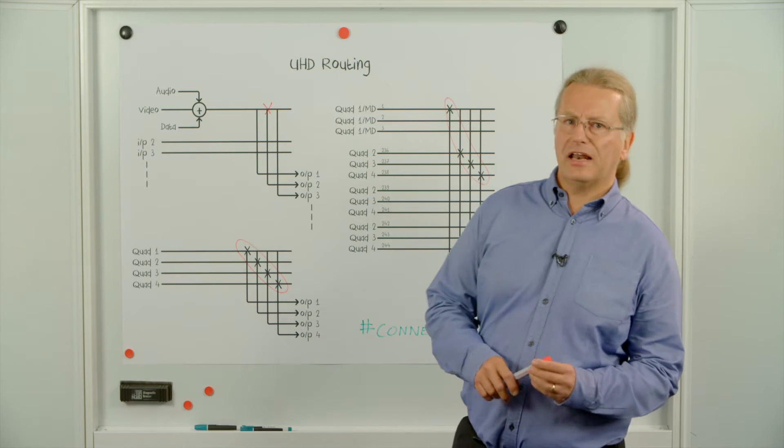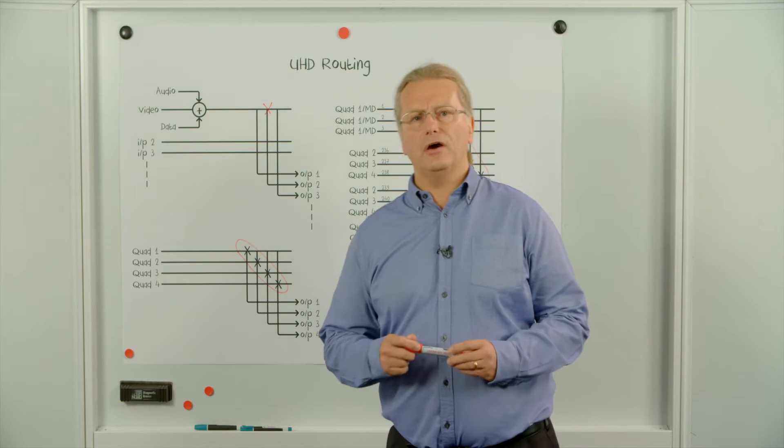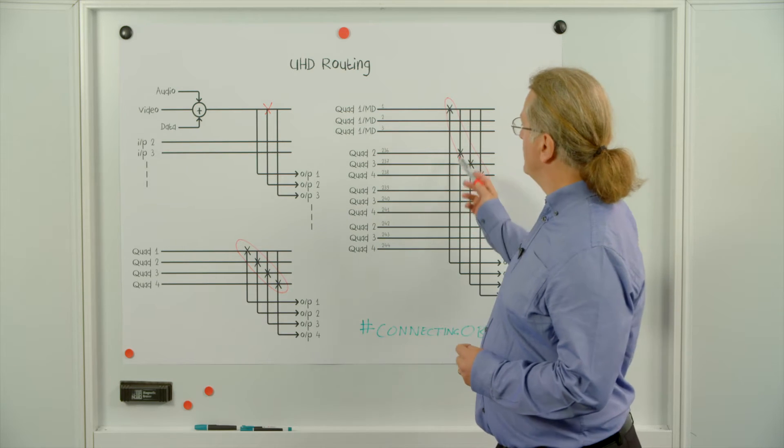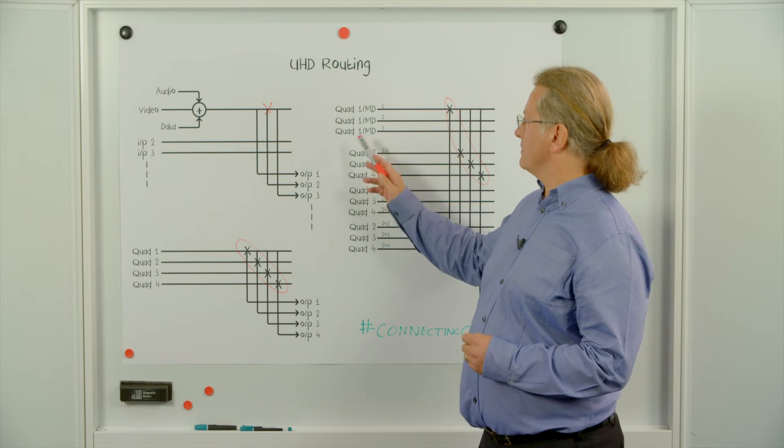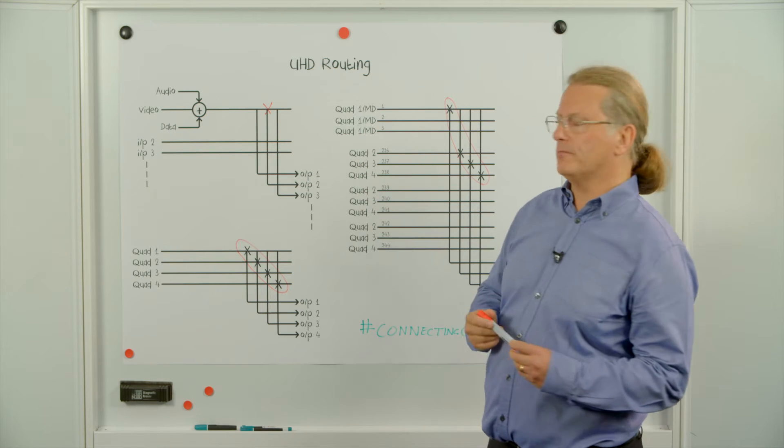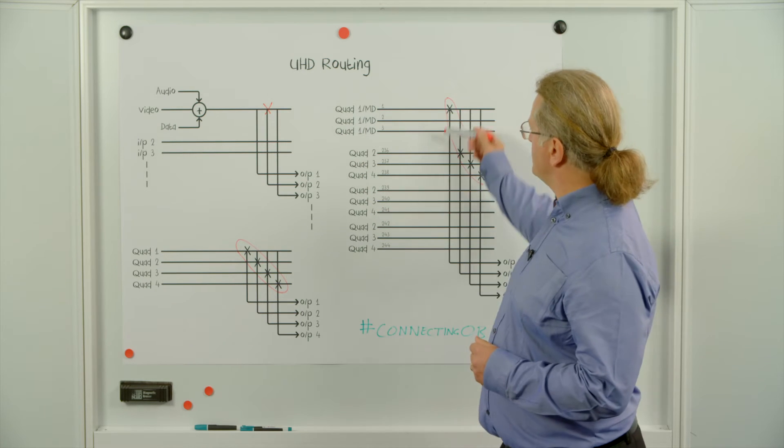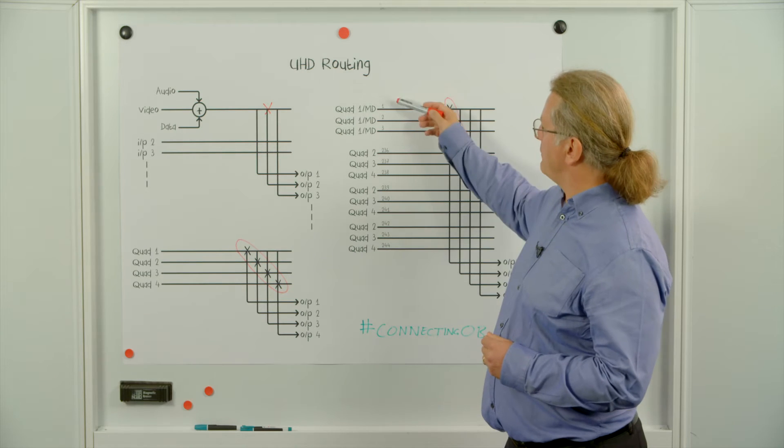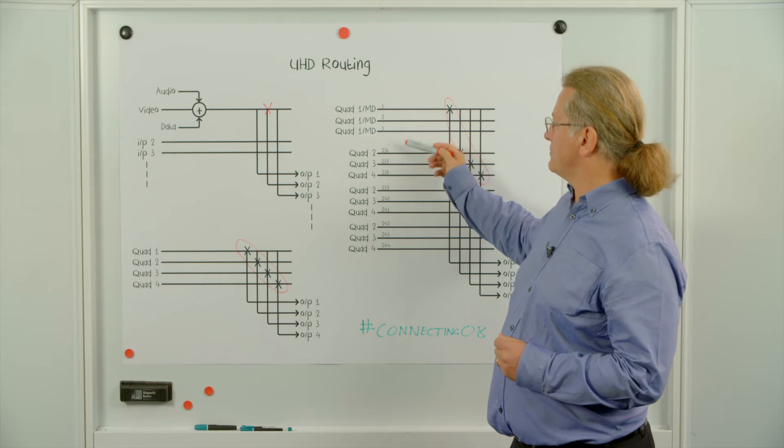Now, some routers allow you to group signals so that they know which four inputs and outputs form UHD groups. And here we can see we have some quadrants that are split up across four inputs. However, you might notice that they're not in contiguous connector groups. Here we have input 1 and then 2, 3, 6, 3, 7 and 3, 8.